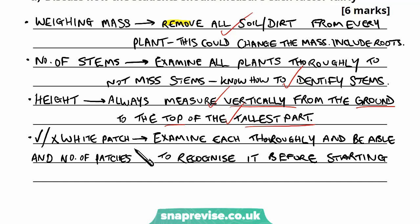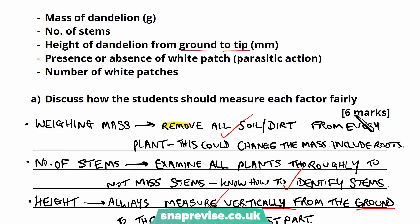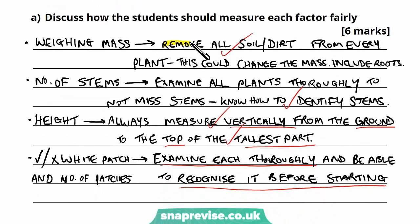For the presence and absence of the white patch, you have to know exactly how to recognise it before starting, because different white patches could mean different things — they could be different pathogens or just part of the plant's natural colouring. You need to be able to identify whether parasites are present and examine each plant thoroughly. When facing a six-mark question, if there are four or five main things to discuss, a couple of sentences for each one gets you the total marks.